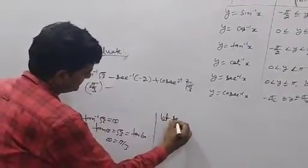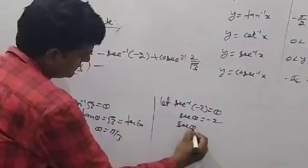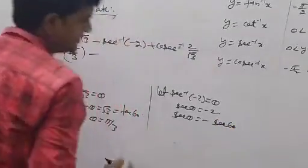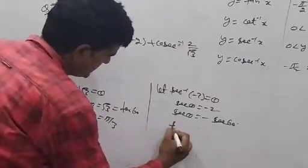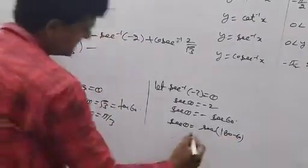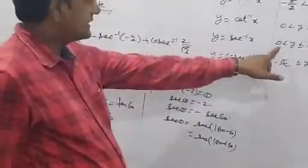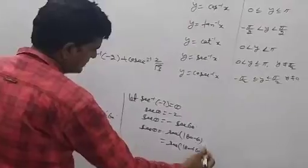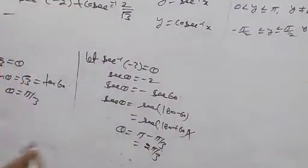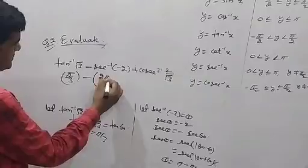Let sec inverse minus 2 equal theta. Then sec theta equals minus 2. Since cos 60° equals 1 by 2, sec 60° equals 2. For sec inverse, the range is 0 to pi. We check: sec(180° minus 60°) equals minus sec 60°, so theta equals pi minus pi by 3, which gives 2pi by 3. The principal value of sec inverse minus 2 is 2pi by 3.